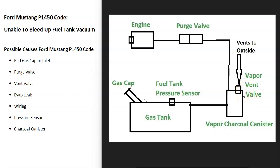There's also a vent valve on the charcoal canister. The computer can use this to close the system off and run tests. This vent valve basically opens to outside air. A hose then leaves the charcoal canister and goes up to the top of the engine to what's called a purge valve. The purge valve stays closed when the engine isn't running, then opens when the engine is running so all the gas vapors can go in and get burnt off.